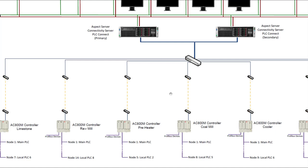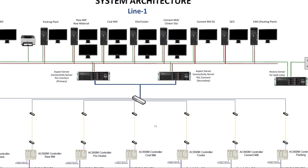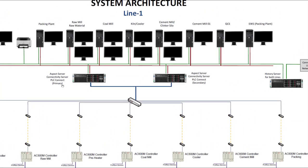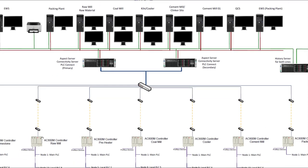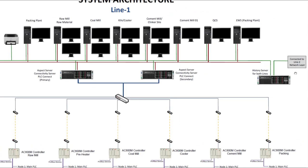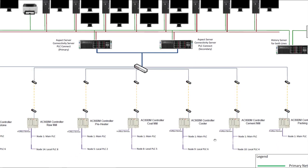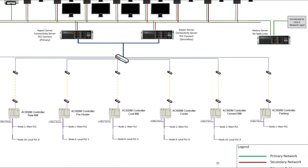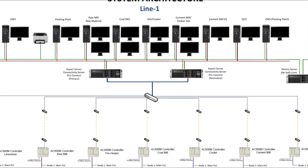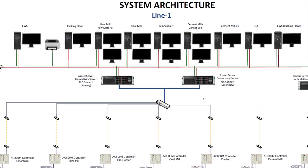The network of PLCs sends its data to an upper level — this is the operator level. These are the servers that collect the data from the PLCs. In the form of the historian, we have the history server with a SQL database, and it stores the process data coming from the sensors and actuators through the PLCs.